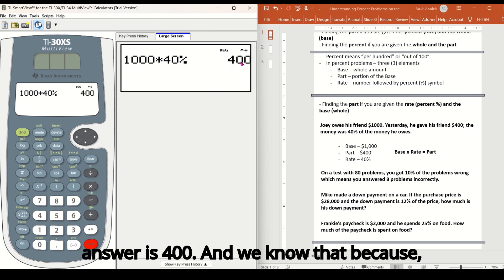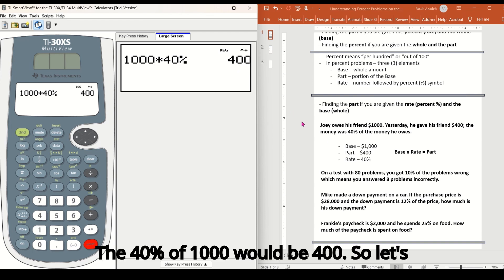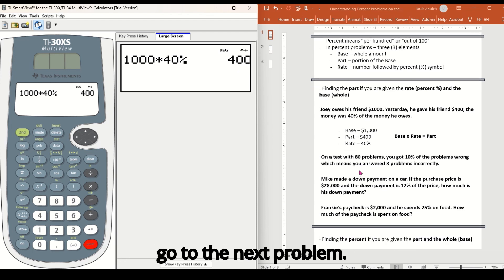And the answer is 400. And we know that because they gave us the part, but that's how we know that the 40% of 1000 would be 400. So let's go to the next problem.